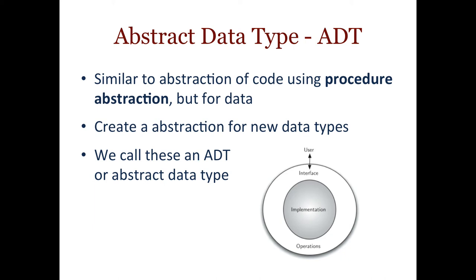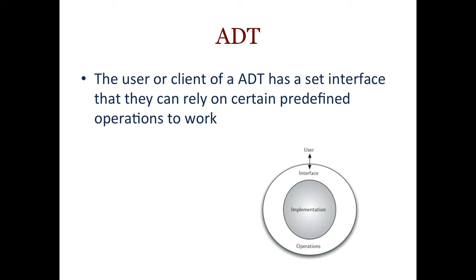For example, a type of data called a list: we'll have an abstract data type interface which lists the methods that a user would expect a list to have. The client code that uses that data type defines some memory to store the data, then has a variable that points to it and can call methods on that data. How it actually does things and how it represents the data in bits in memory is inside the definition of the abstract data type — the user doesn't need to know that. They just need to know the interface: what methods do I call to work with this data? The user or client of an ADT has a specific interface they can rely on for predefined operations to work.